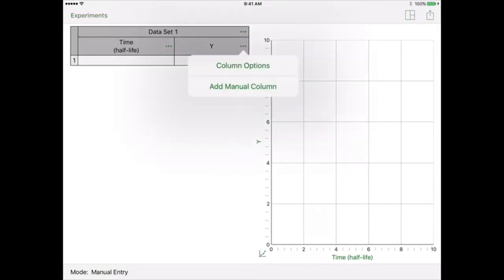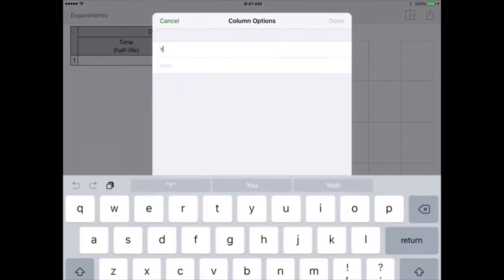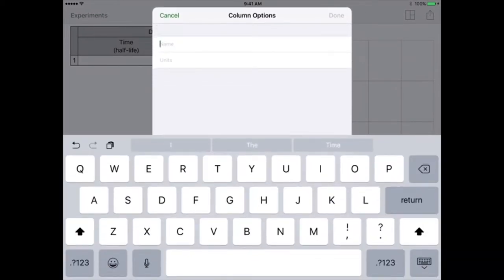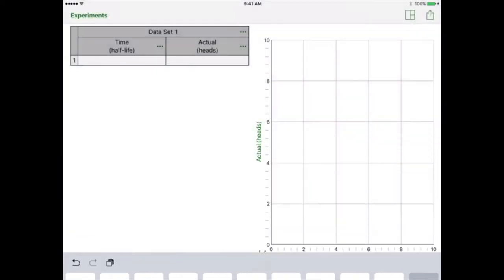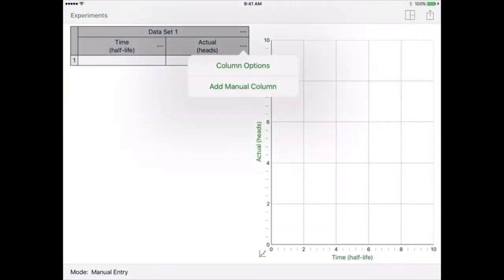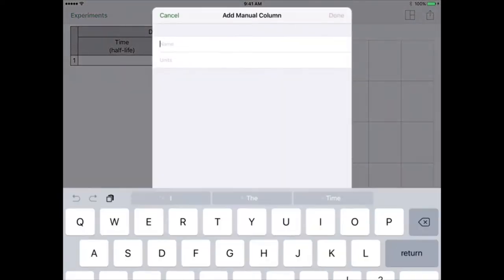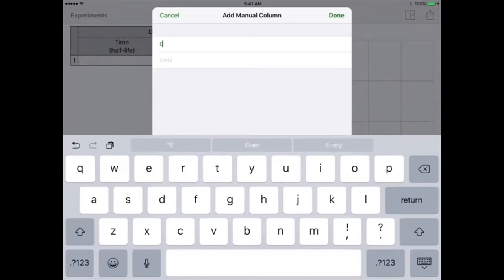The second column we're going to call actual, so these are going to be the actual values of the heads that we got. I'm going to name the unit heads. If I go over to the right set of dots again, I can add a manual column. We're going to call this expected, and the units again are going to be heads.